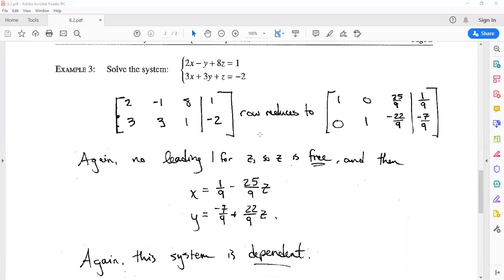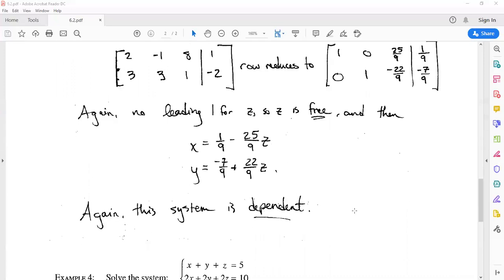Again, we don't even have a leading one—we don't even have a row for that at all. So z can be any number we want, and then x and y will be fixed to be equal to these corresponding values for that choice of z. So again, this one is dependent on which choice you make for z, and there is an infinite number of solutions here—one for each choice of real numbers z.